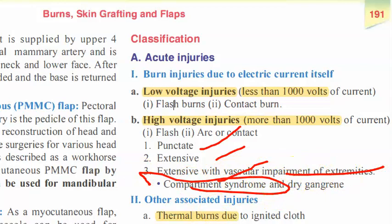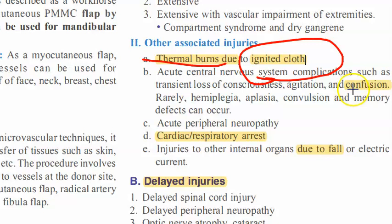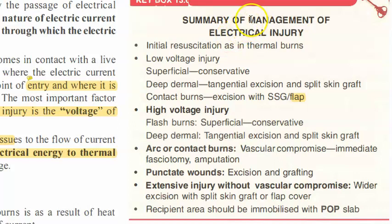Other injuries can occur — not exactly because of electricity but because the person's clothes caught fire causing thermal burns. The person can also have confusion, agitation, peripheral neuropathy, and cardiac arrest. Because of falling from the shock, they can have additional physical injuries. Delayed injuries include delayed spinal cord injuries, delayed peripheral neuropathy, optic nerve atrophy, and cataract — so the eyes can also get injured.